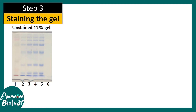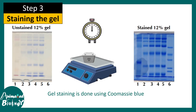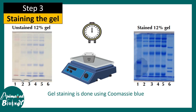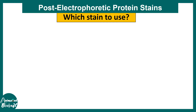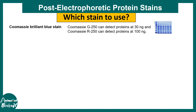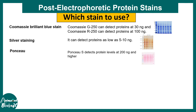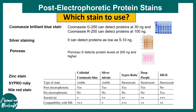After the gel has run properly, it is important to stain the gel. An unstained gel looks plain, but after staining with a specific reagent like Coomassie brilliant blue it shows a molecular weight ladder and specific bands corresponding to different proteins in the sample. There are different stains available: Coomassie brilliant blue, silver stain, and Ponceau. Silver stain is very sensitive and can detect proteins as low as 5–10 nanograms. Ponceau detects at around 200 nanograms or higher. There are also other stains such as zinc stain, Sypro Ruby stain, and Nile red stain. Each stain has its own purposes, benefits, and disadvantages, and a quick overview is provided in a chart.